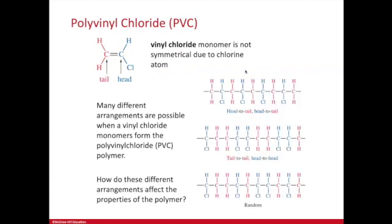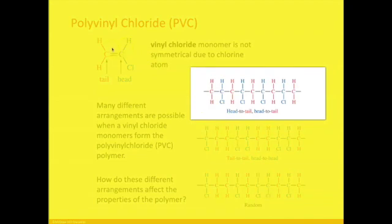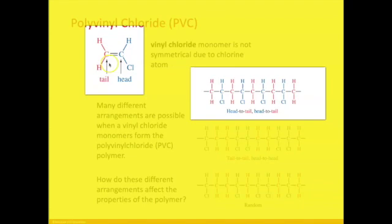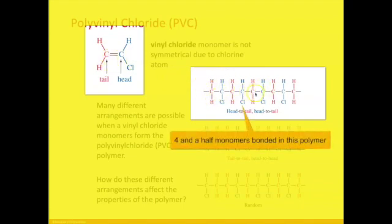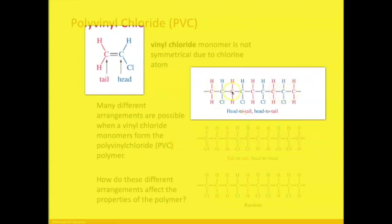The three possibilities are: you can have a head-to-tail, head-to-tail arrangement. Notice the red and the blue - you have red, blue, red, blue, red, blue, and so on. This is one monomer, two, three, four. So the head of one monomer is attached to the tail of the next monomer. The head of this monomer attached to the tail of the next monomer.